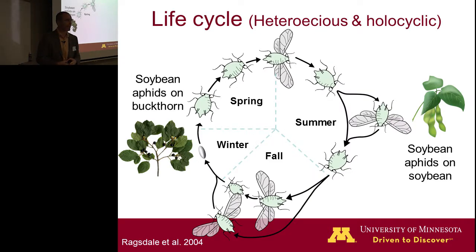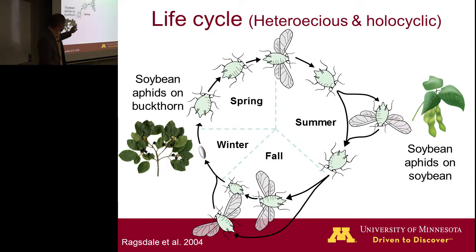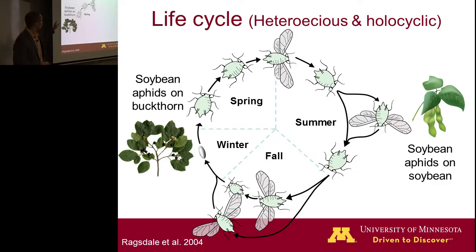This insect has a pretty complicated life cycle. Entomologists call it heterogeneous and holocyclic, which basically means it spends part of the year on one plant, the other part on another plant, and it does have sexual reproduction sometime within the year. In the spring, soybean aphids are on buckthorn. They hatch from eggs, go through a few generations, and then a winged form is produced. That winged form migrates to soybean, and we usually see them showing up in mid to late June.